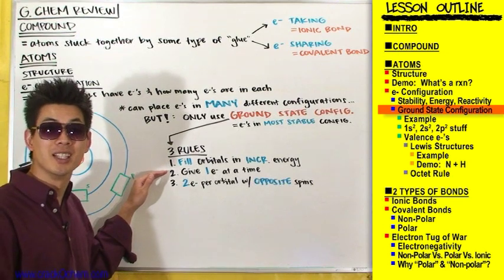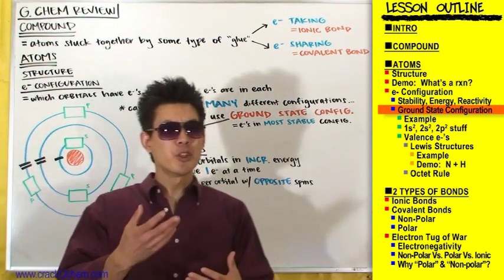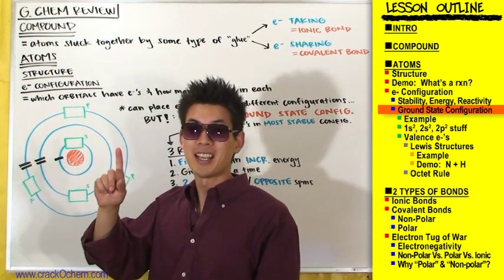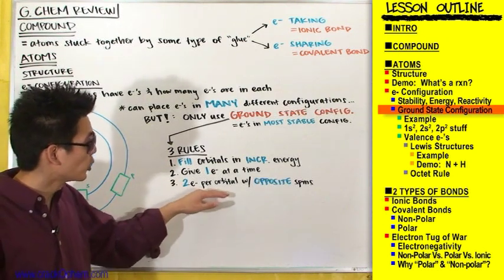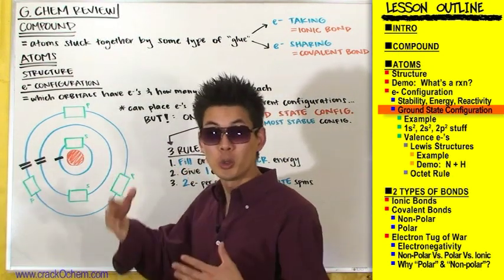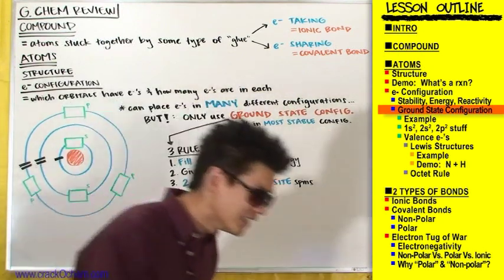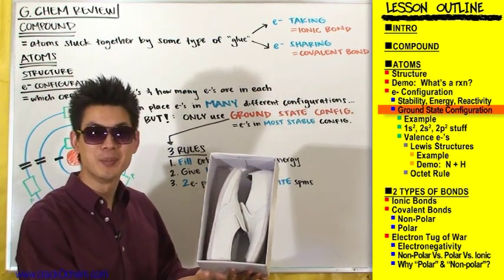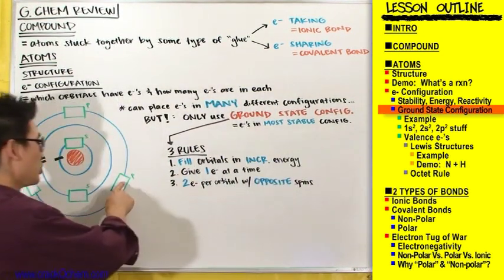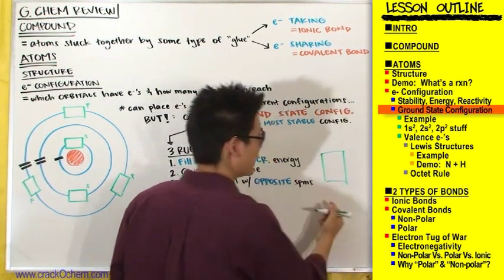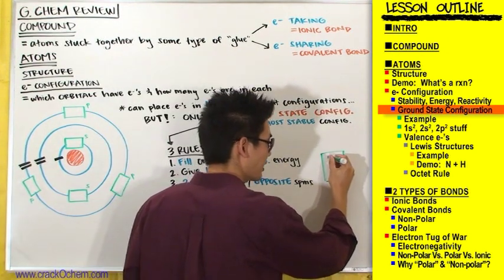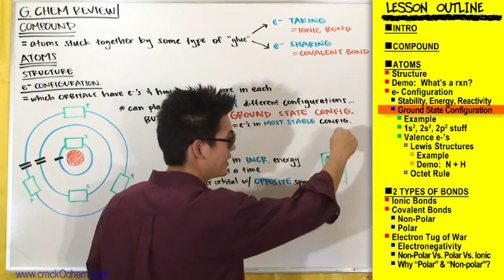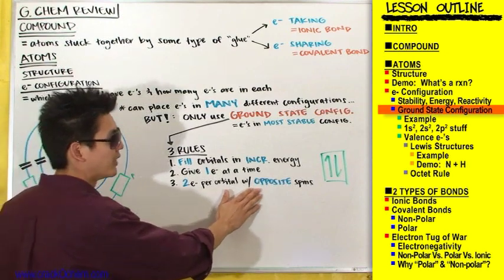Our second rule: give only one electron at a time. For carbon's six electrons, you don't dump all six into one orbital at once — you give one at a time. Our third rule: two electrons per orbital with opposite spins. Each orbital can hold a maximum of two electrons facing opposite directions — just like two shoes in a shoe box facing opposite ways, which is the most stable orientation. An orbital is drawn as a green rectangular box, and you can place a maximum of two electrons in it with opposite spins.